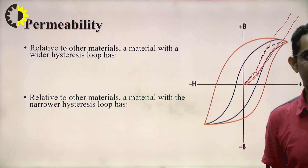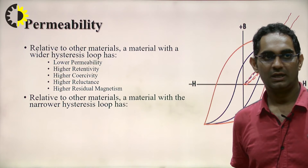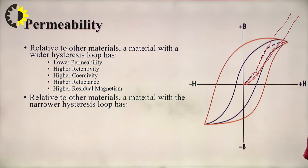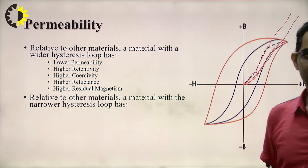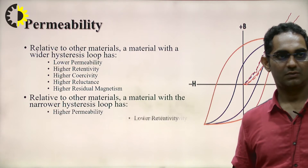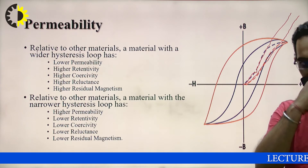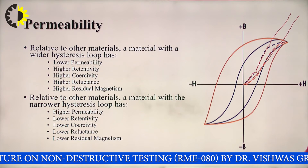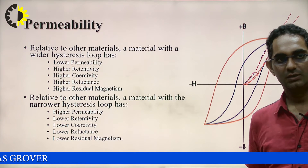Relative to other materials, a material with a wider hysteresis loop has lower permeability, higher retentivity, higher coercivity, higher reluctance, and higher residual magnetism. Conversely, a material with a narrower hysteresis loop has higher permeability, lower retentivity, lower coercivity, lower reluctance, and lower residual magnetism.